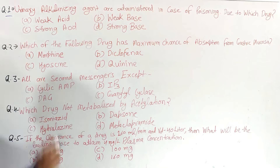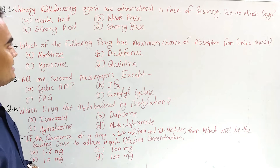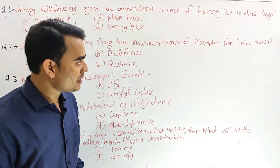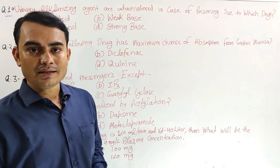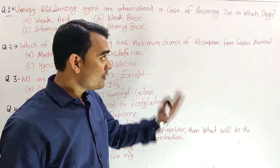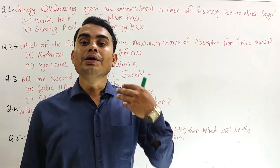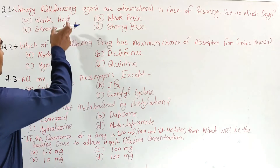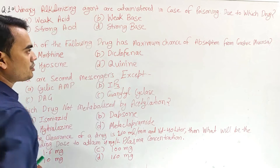First question: urinary alkalinizing agents are administered in case of poisoning due to which drug? The question is asking under which poisoning condition you will give urinary alkalinization. The options are: weak acid, weak base, strong acid, strong base.